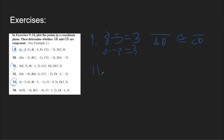Number 11. For points A and B, their y-values are the same, so find the difference between the x-values: 8 minus negative 1 equals 9. For CD, their x-values are the same, so find the difference between the y-values: 10 minus 3 equals 7. Since 9 is not equal to 7, segment AB is not congruent to segment CD.